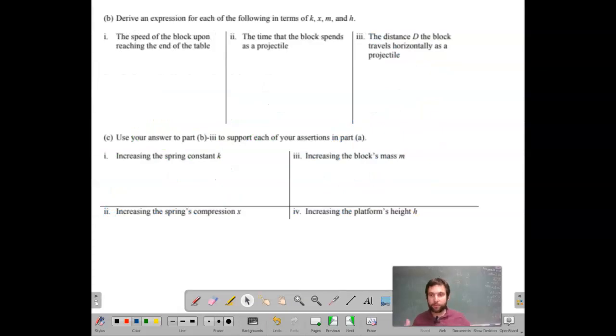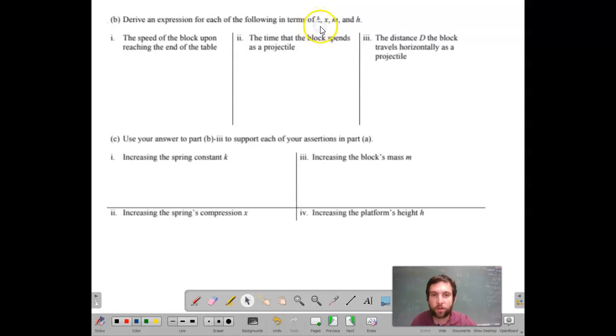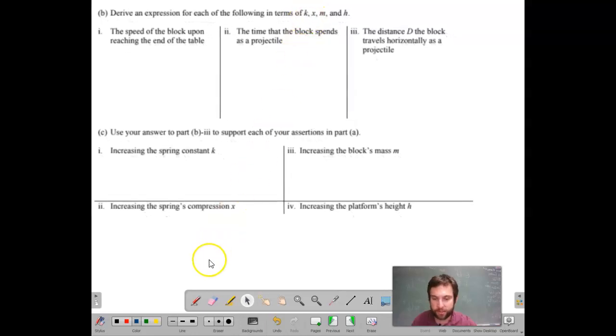And now the best part of this whole question. Derive an expression for each of the following in terms of k, x, m, and h. So these are constraints for us. This is what we have to keep our answer in. These terms: k, x, m, h. We shouldn't have anything else other than some constants. So if g is there, that's no big deal. If you get v or a height measured in y, that's no good. It needs to be in h.